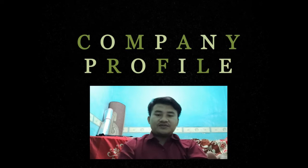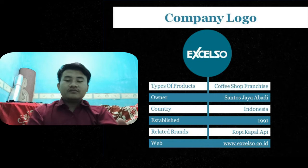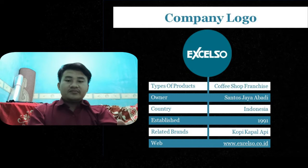Company profile: Excelso's company logo, types of product — cup shop, franchise. Owner: Santos Jaya Abadi. Country: Indonesia. Established: 1991. Related brand: Kopi Kapal Api. Website: www.excelso.co.id.